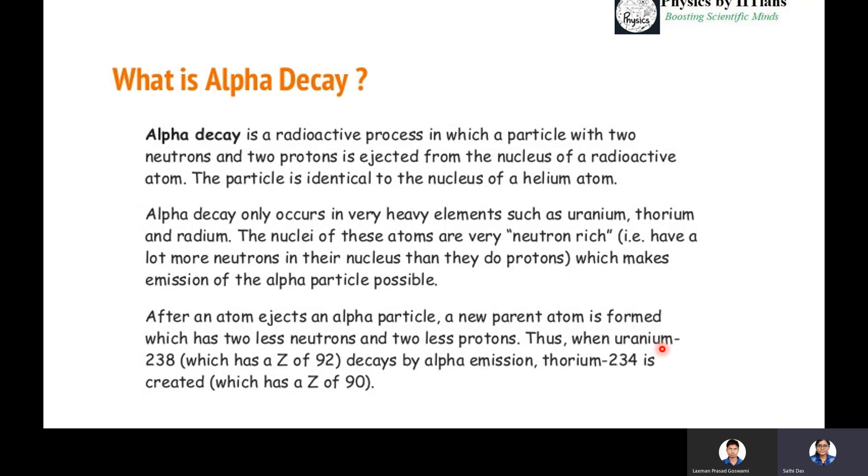Suppose there is uranium-238. Its Z value, that is proton number, is 92 and it decays by alpha emission. What will be the produced product nucleus or daughter nucleus? The daughter nucleus will be thorium with mass number 234, because 238 will be reduced by four. There will be a reduction of Z, that is the proton number, and it will become 90. So thorium-234 and Z is 90.